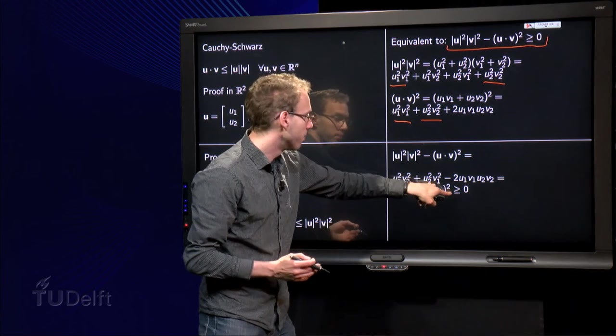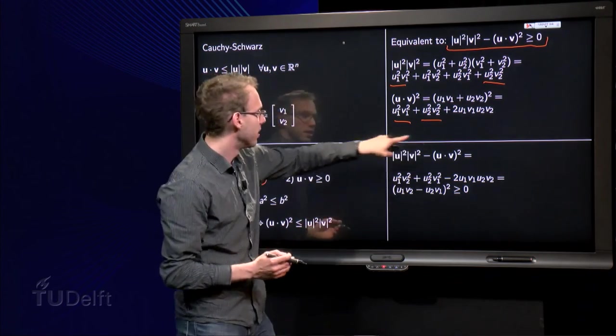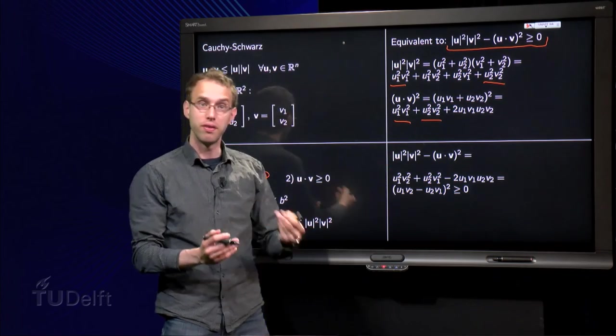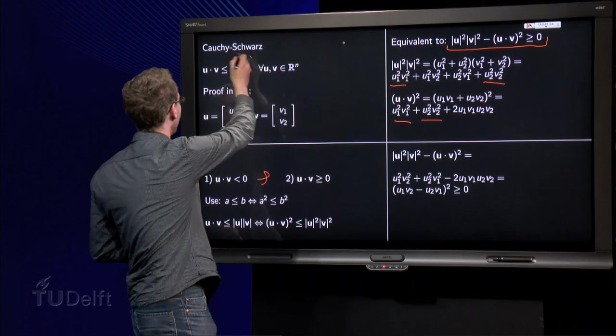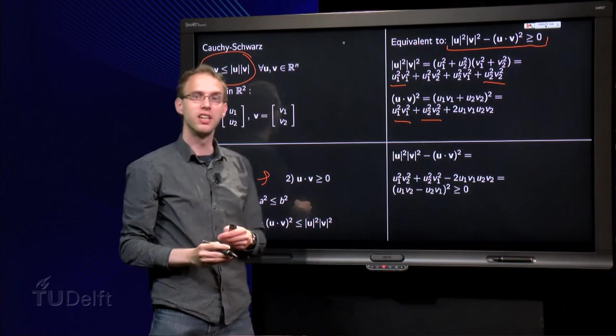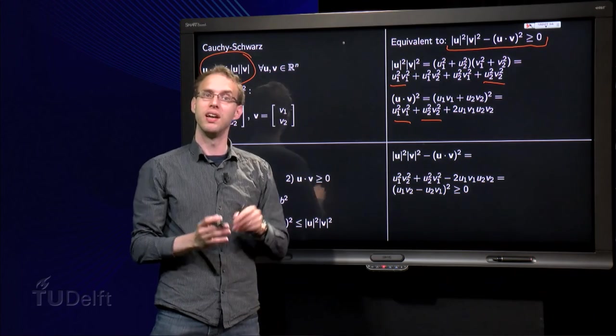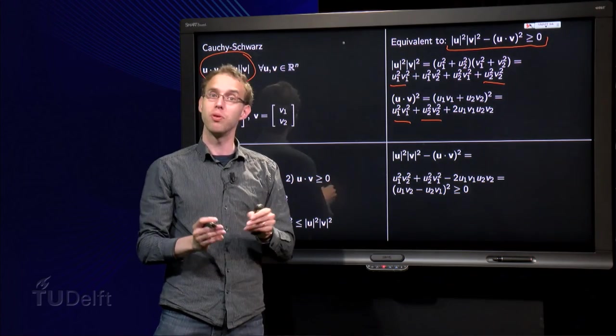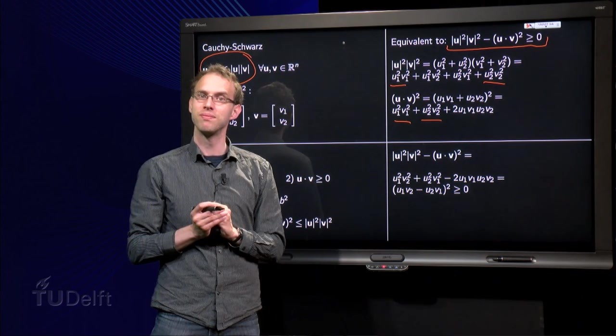So that means that this inequality over here holds. That means that this combination in fact was positive. And that finally means going backwards that in fact Cauchy-Schwarz indeed holds. So now we know for all vectors u and v that u·v is smaller or equal than the length of u times length of v.